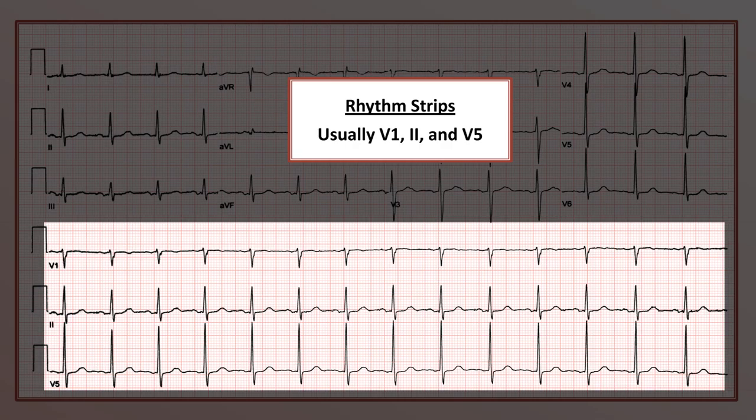Typically leads V1, V2, and V5 are the three leads shown in the rhythm strips. Those are not random choices, as V1 and V2 are the leads in which the atrial activity is usually the most prominently seen.